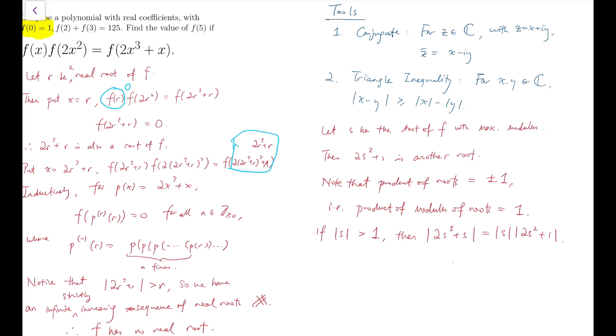However, notice that the 2s² + 1 can be written as the difference of 2s² and 1 from the triangle inequality that I've introduced above. And that's equal to 2 times the square of modulus of s minus 1.